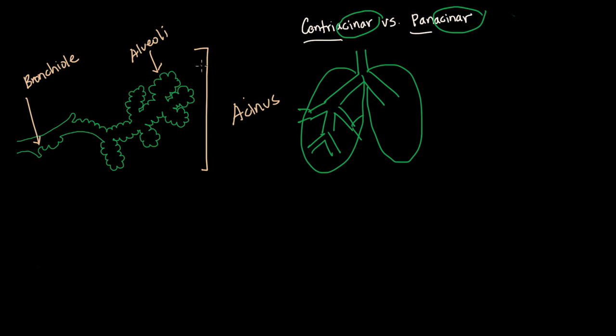That tells us centriacinar versus panacinar - we're talking about where in this we are. In this normal acinus that I've drawn, you can see the tightly coiled structures in the alveoli and along the airways too. This elastic coiled shape is possible because of our protein elastin.